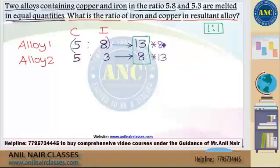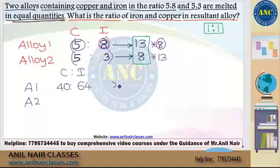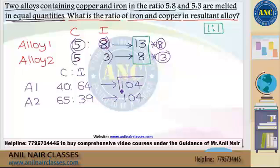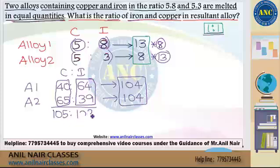Multiply alloy 1 (5 and 8) by 8, and alloy 2 (5 and 3) by 13. So alloy 1: 5×8=40 copper, 8×8=64 iron, total 104. Alloy 2: 5×13=65 copper, 3×13=39 iron, total 104. Both are 104, which is equal quantity 1:1. Copper in resultant is 40+65=105. Iron is 64+39=103. They are asking iron to copper, so the answer is 103:105.